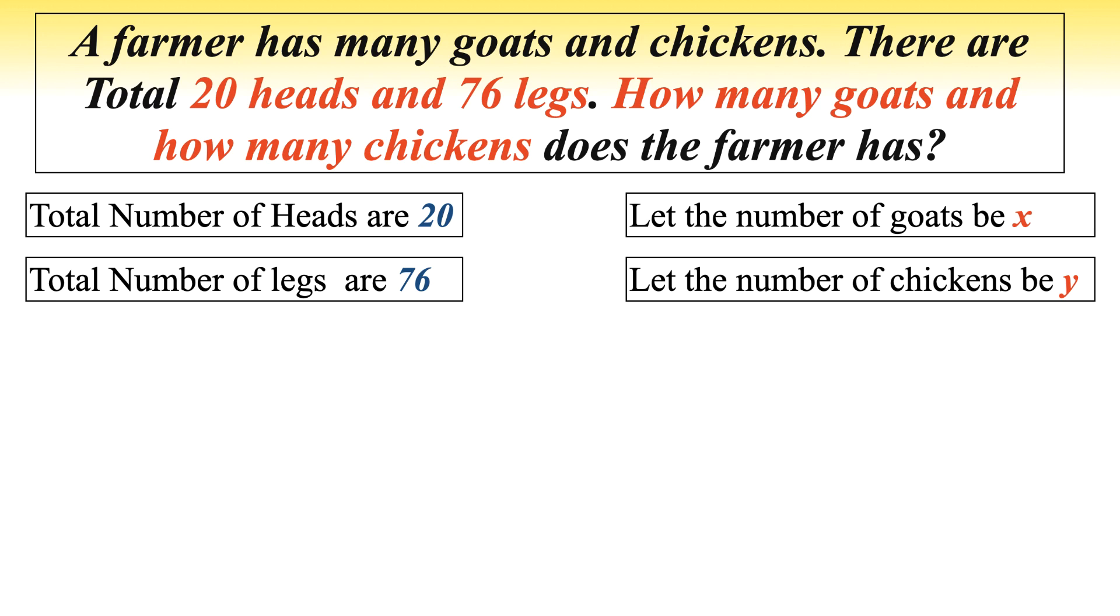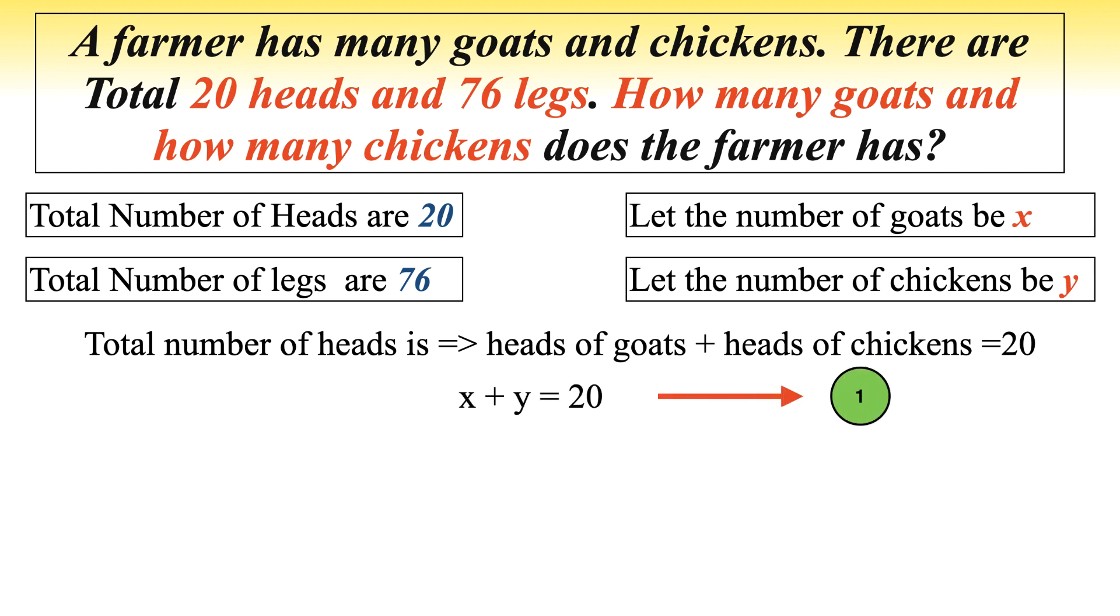Each of them have one head and each chicken has two legs whereas each goat has four legs. So total number of heads is heads of goats plus heads of chickens which equals 20. Now the equation becomes x plus y equals 20, where x is number of goats and y is number of chickens.